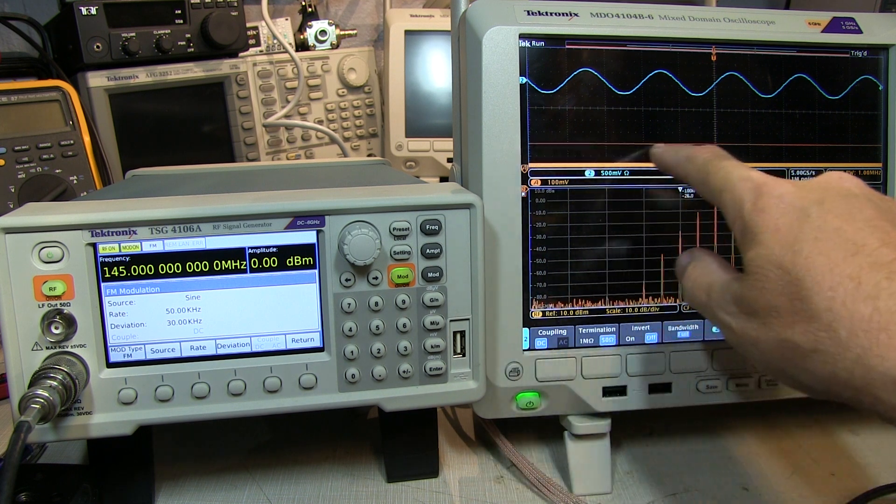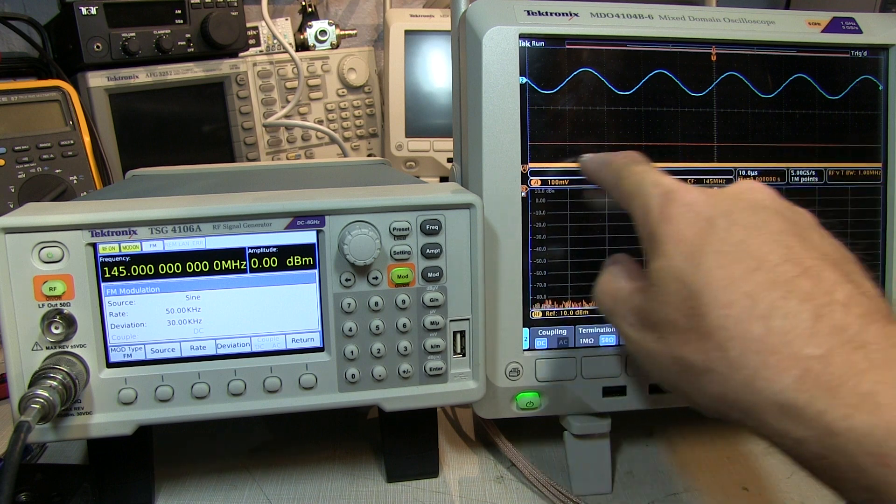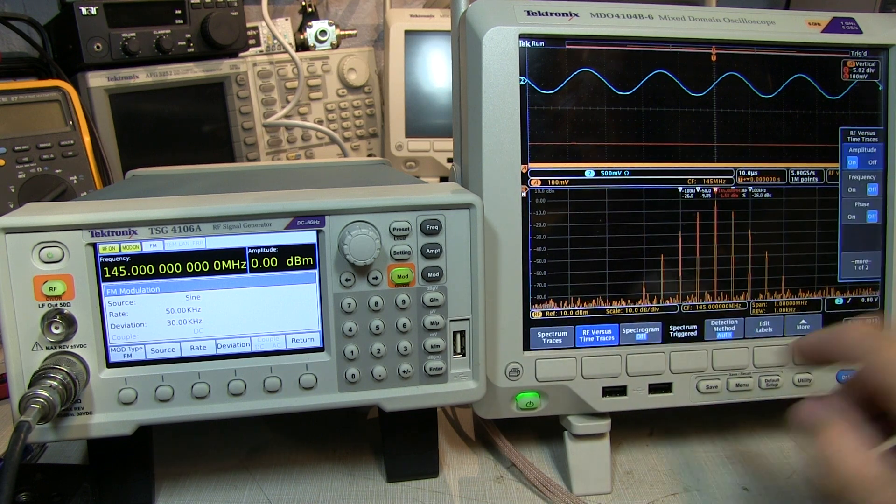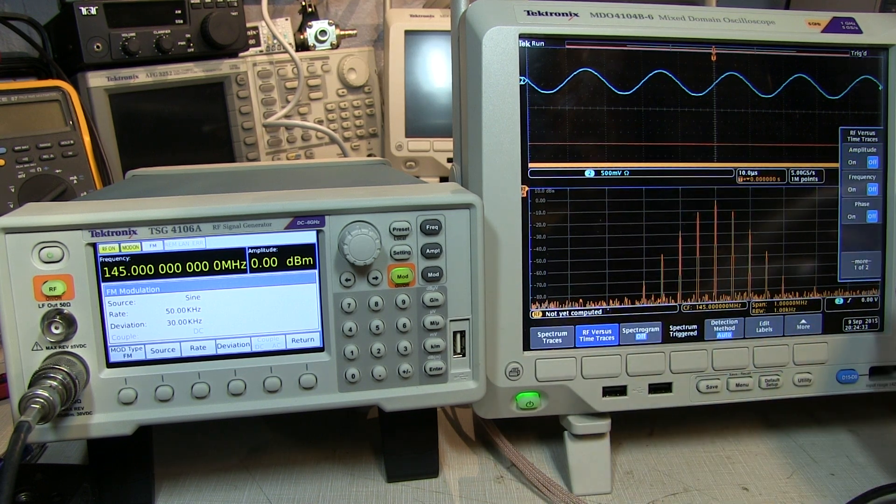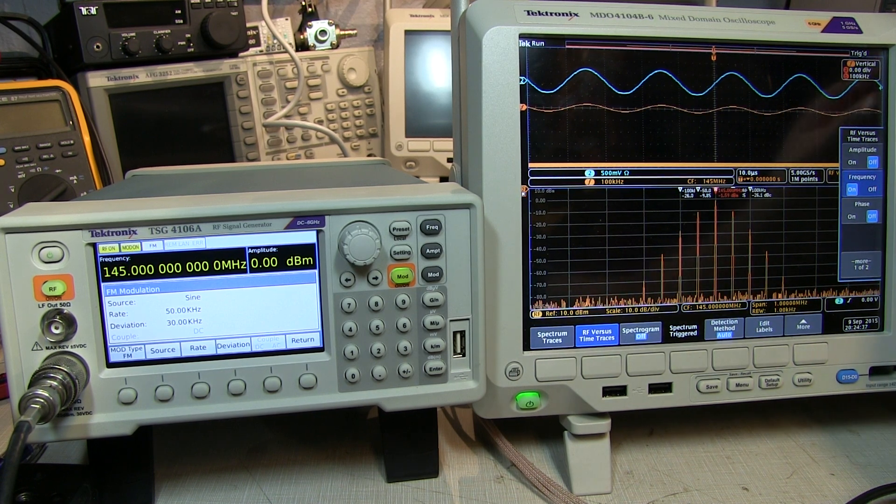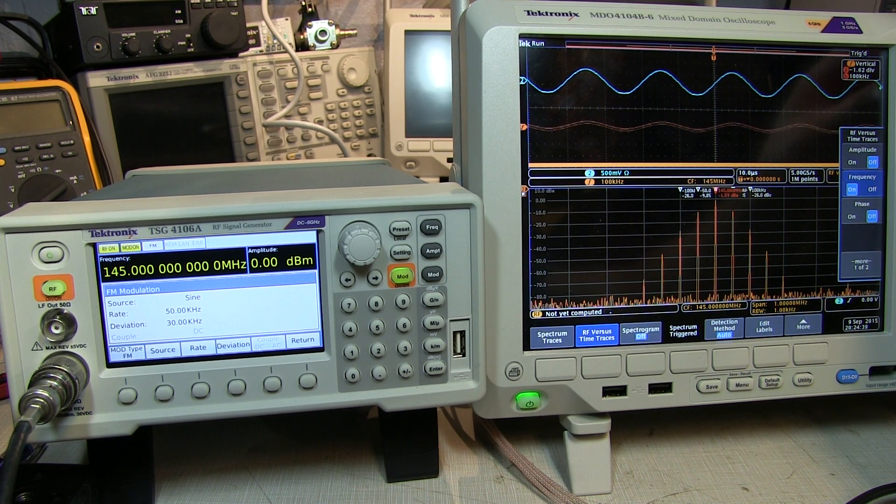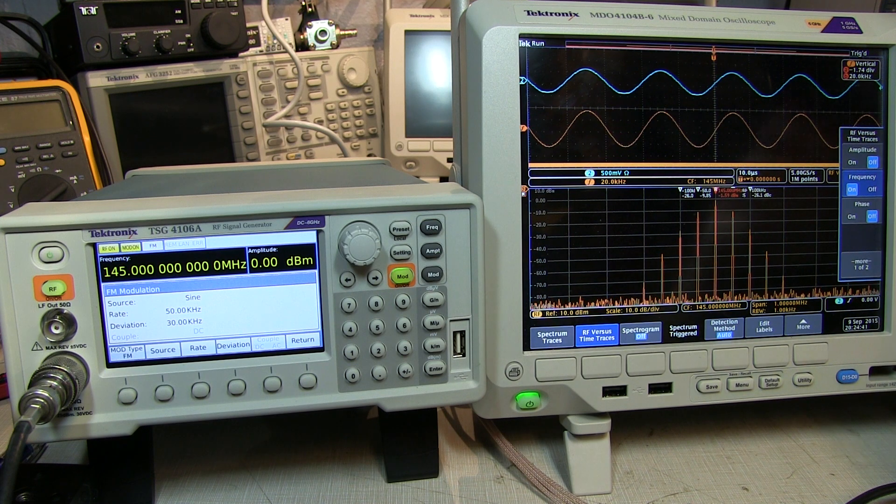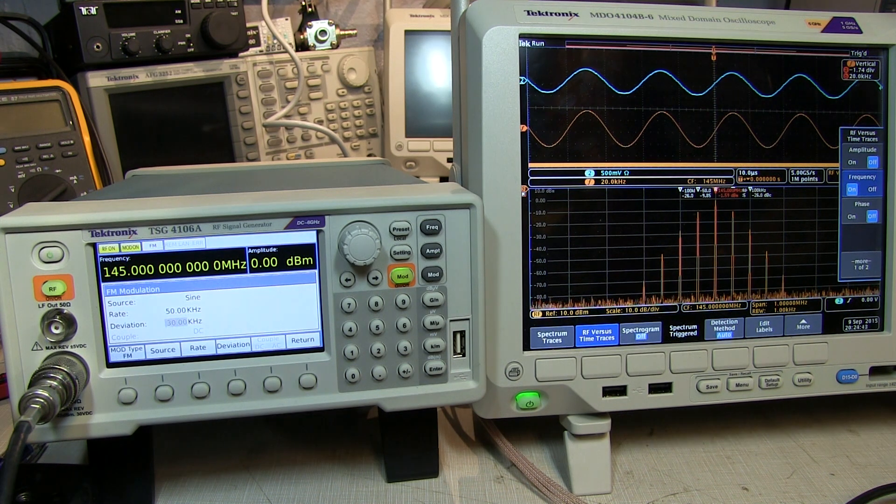Now of course, the amplitude is not changing over time, so the amplitude versus time trace isn't going to show us anything. So if we turn that one off, and turn on our frequency versus time trace, then I'll just adjust the position of that and the scale of that, and we can see that basically has the same shape.